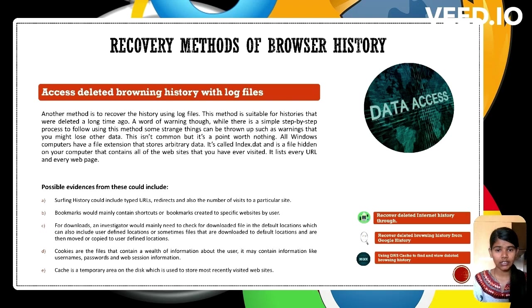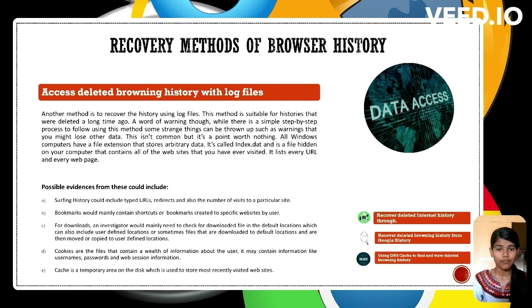The second method is accessing deleted browsing history with log files. Log files, particularly the index.dat file on Windows computers, can be used to recover long-deleted browsing histories. These files can provide evidence such as surfing history, typed URLs, redirects, and visit frequency. Also recoverable are bookmarks — user-created shortcuts to specific websites; downloads — files saved in default or user-specified locations; cookies — data containing user information such as usernames and passwords; and cache — temporary storage of data from recently visited websites.